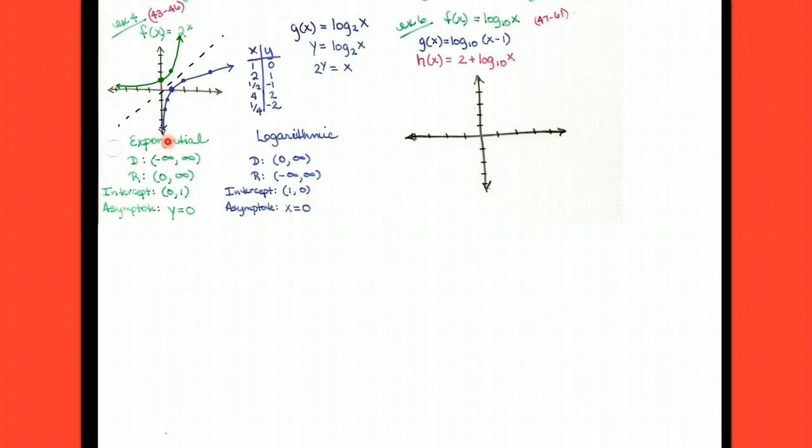The other thing is with inverses, x and y switch places. So, if you'll notice, the two landmarks that we used for our exponential, we had the point 0, 1. If x and y switch places, that would give me a landmark on the logarithmic of 1, 0, right? Our other landmark was we had a horizontal asymptote at y equals 0. If x and y switch places, that should give me a vertical asymptote at x equals 0.